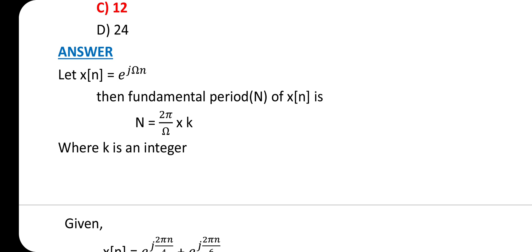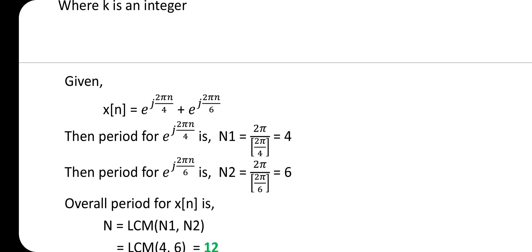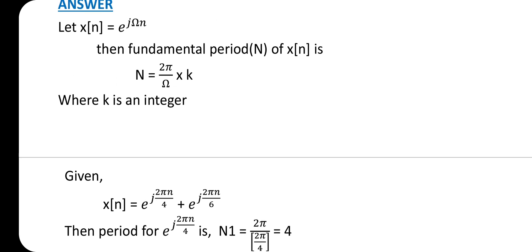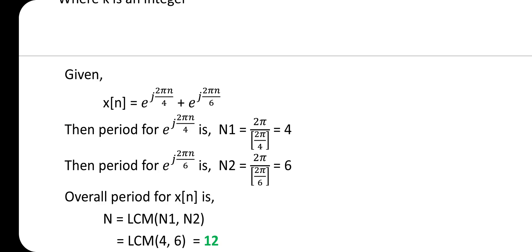Let x(n) = e^(j2πn/4) + e^(j2πn/6). The period for e^(j2πn/4) is n1. Substituting in the standard fundamental period equation 2π/ω, where ω = 2π/4, we get n1 = 4.